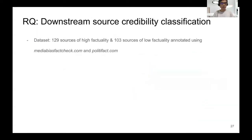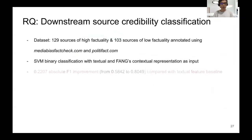We also measure the representation quality on downstream source credibility classification. And we observe that there's a 0.22 absolute F1 improvement compared with the textual features only baseline.